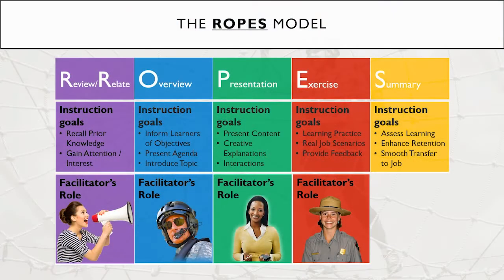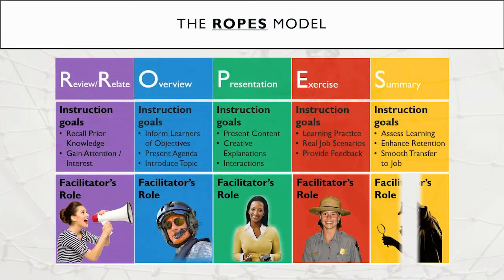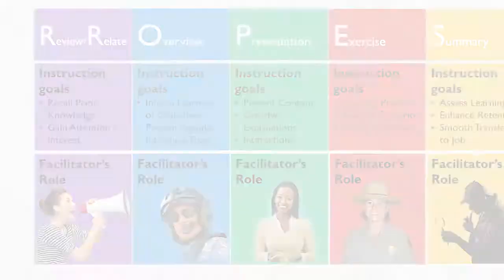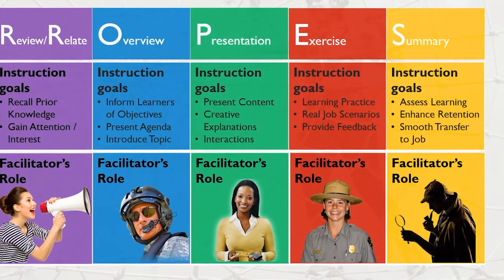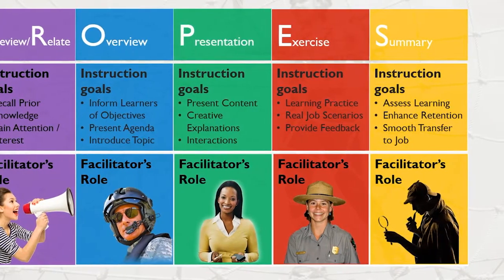If it's a job training, you want to ensure that the content has a smooth transfer to the job by ensuring that they're familiar with how to find all job aids and resources. The facilitator's role here is an inspector that finds evidence that effective learning has taken place and all learners are equipped. Well, that's the ROPES model. Just like there are many ways to tie a knot, just make sure you have a way to design an effective learning experience. Maybe this one can be helpful to you.